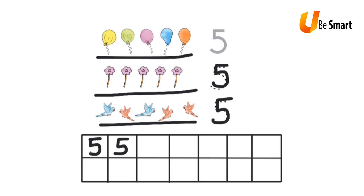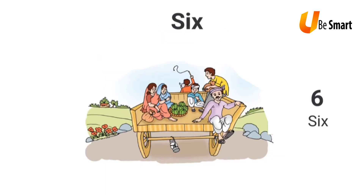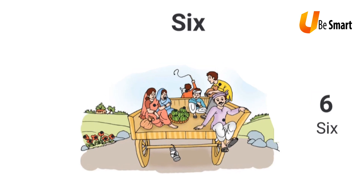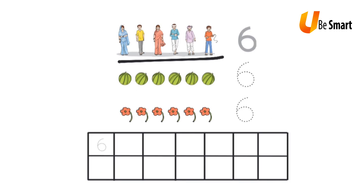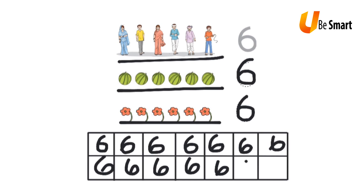In this picture, I see six people sitting on the cart: one, two, three, four, five, and six. I also see six flowers and six watermelons. So I see six people, six watermelons, and six flowers. I write the number 6 along these dotted lines like this, and I also write the number in each of the boxes below.